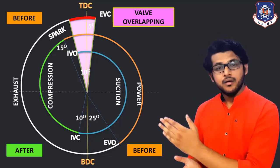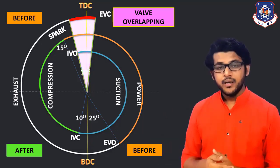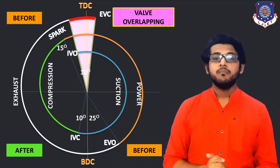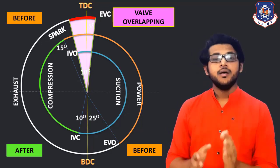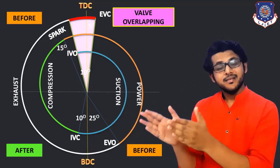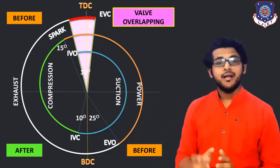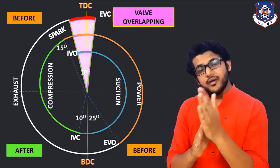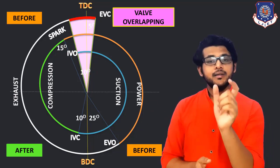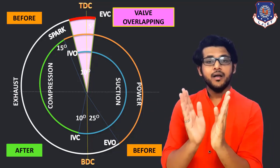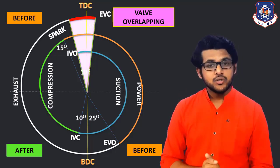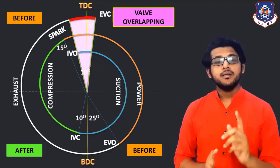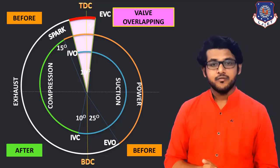To summarize: the inlet valve opens 10 degrees before TDC and closes 10 degrees after BDC. A spark is generated 15 degrees before TDC to account for ignition delay. The exhaust valve opens 25 degrees before BDC. After the exhaust stroke, the exhaust valve closes 5 degrees after TDC, and the overlap between inlet valve opening and exhaust valve closing is the valve overlapping period. That's it for today's session — we will see the diesel engine part of the diagram in the next session. Thank you.